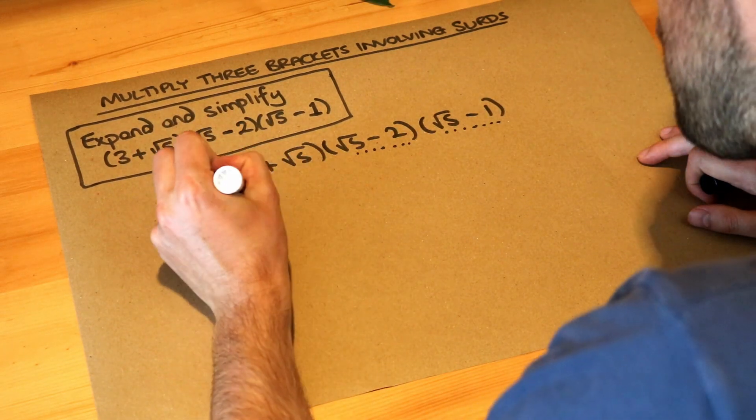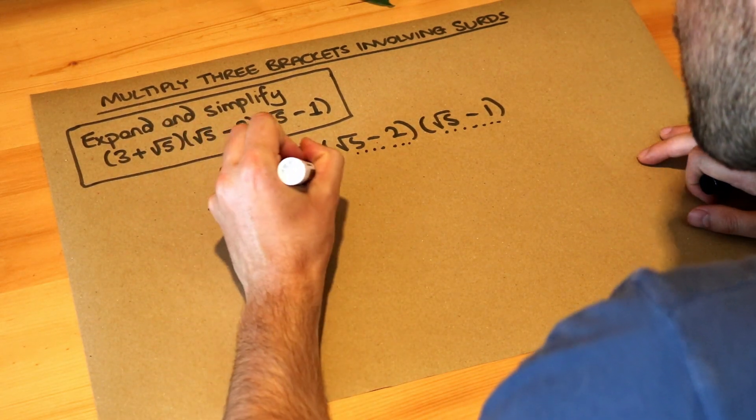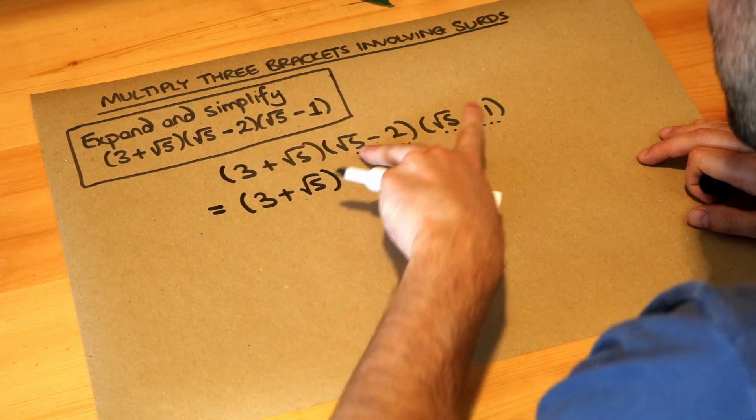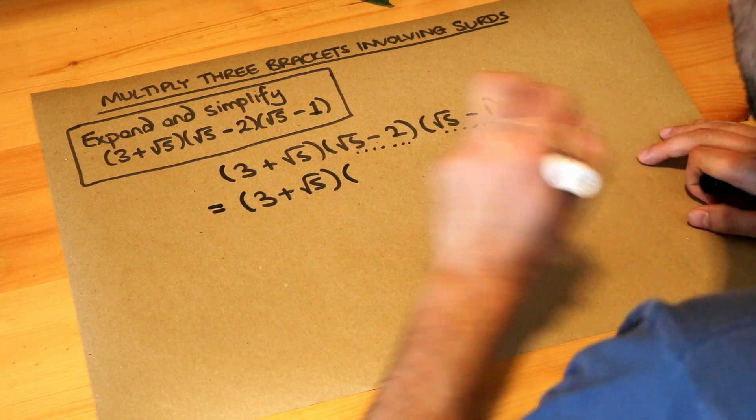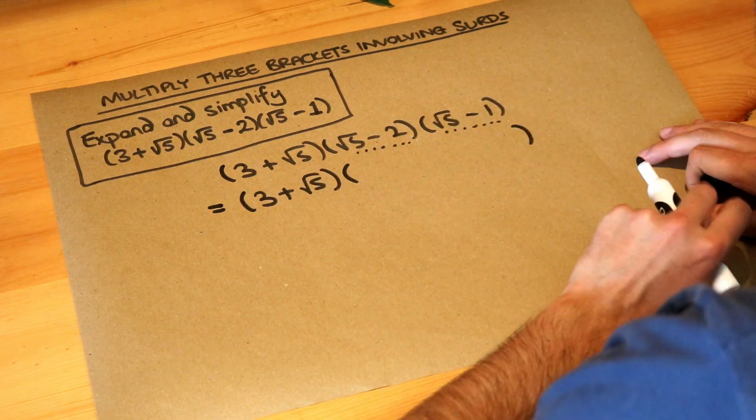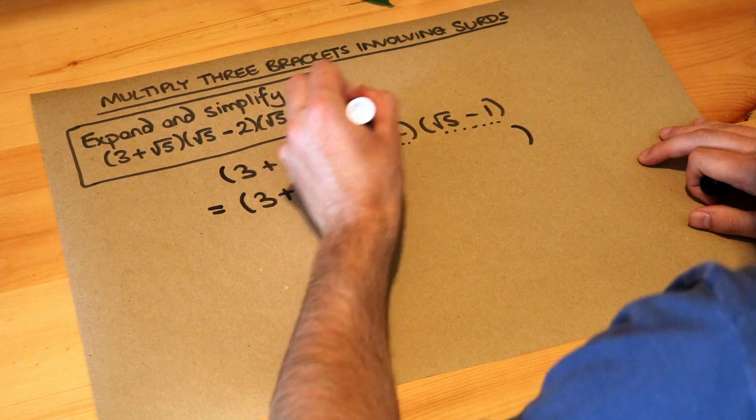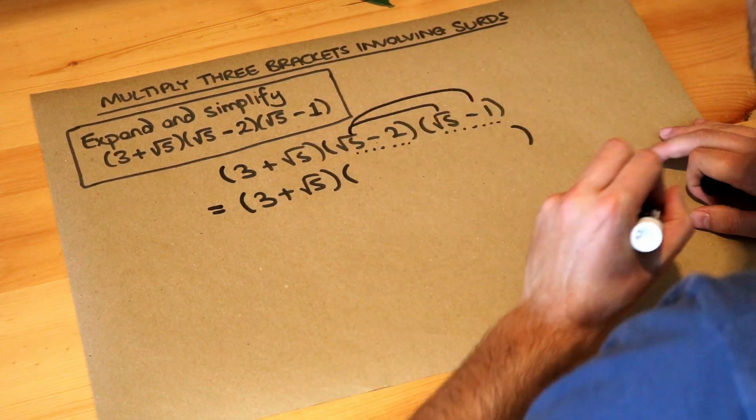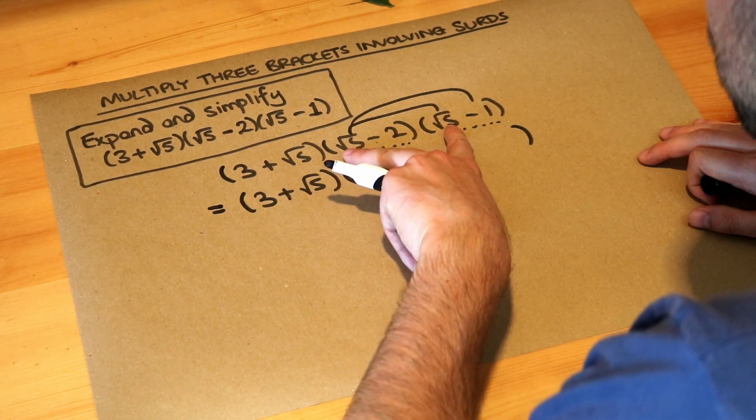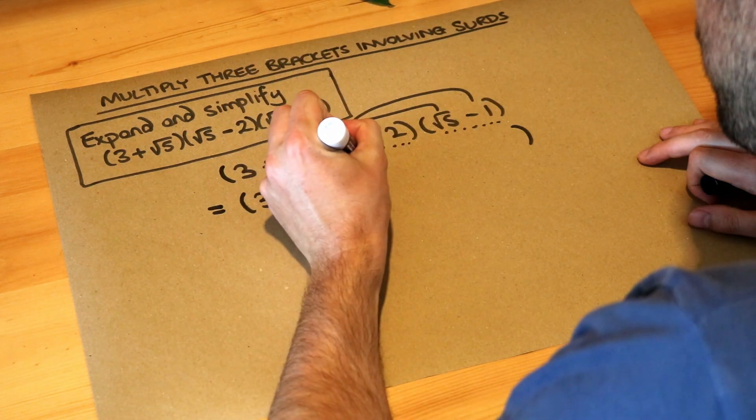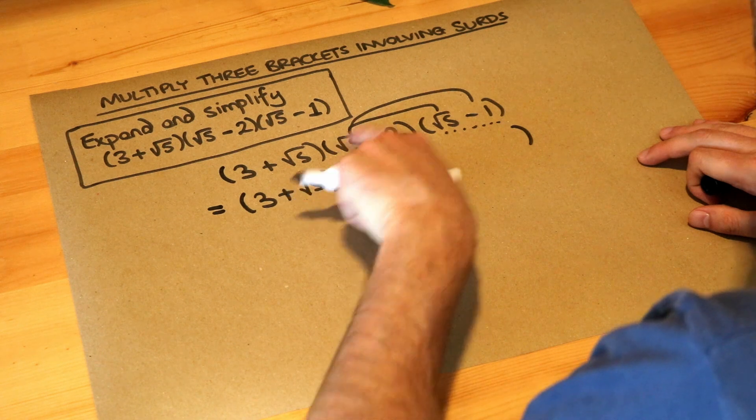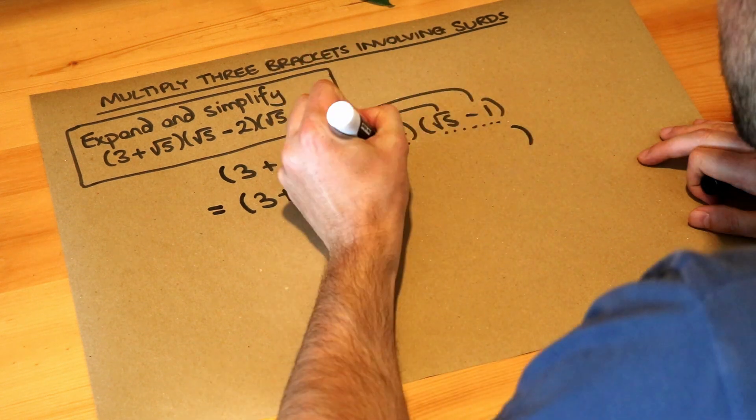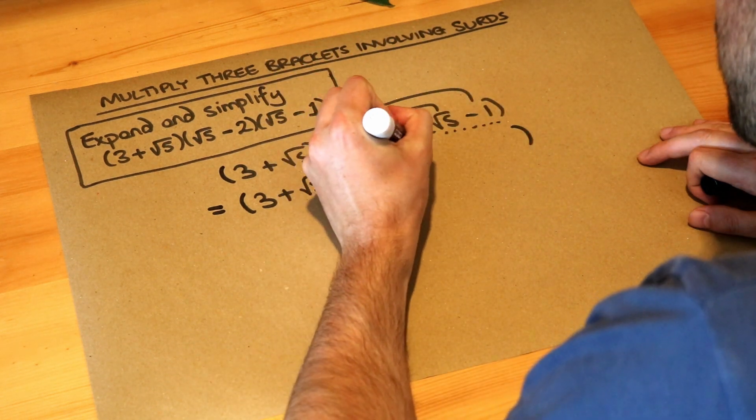We'll leave the first bracket as it is and multiply these two brackets together. We do each thing in the first bracket times each thing in the second. √5 times √5 is just 5. Any surd times by itself eliminates the square root. √5 times -1 is just -√5.